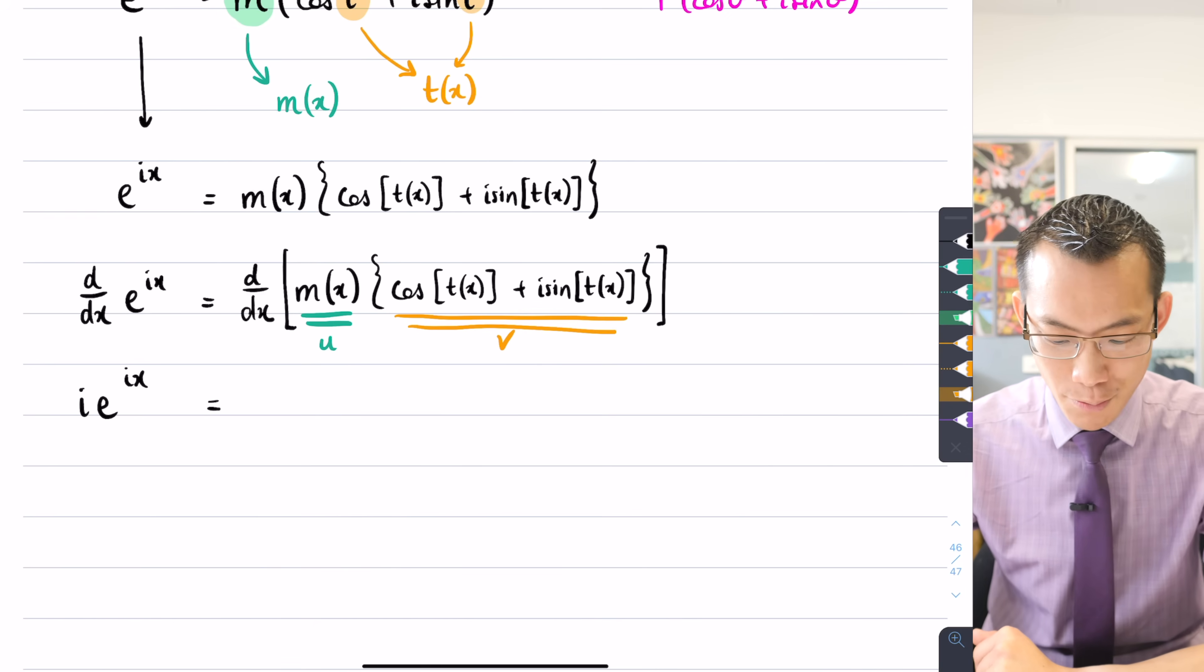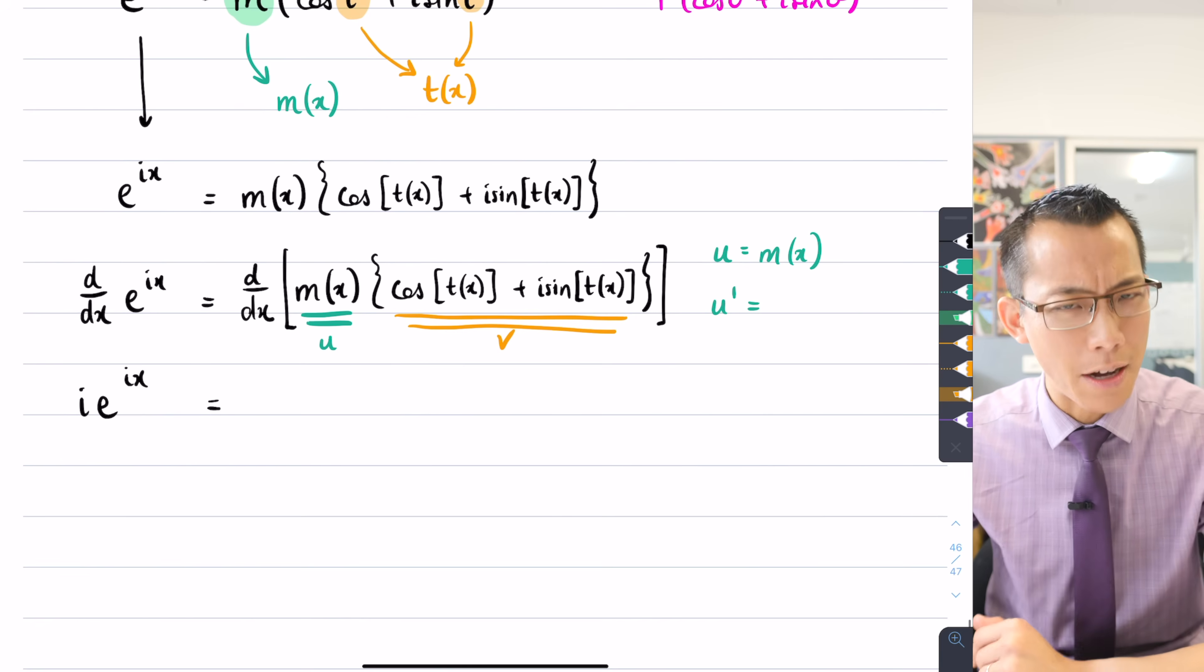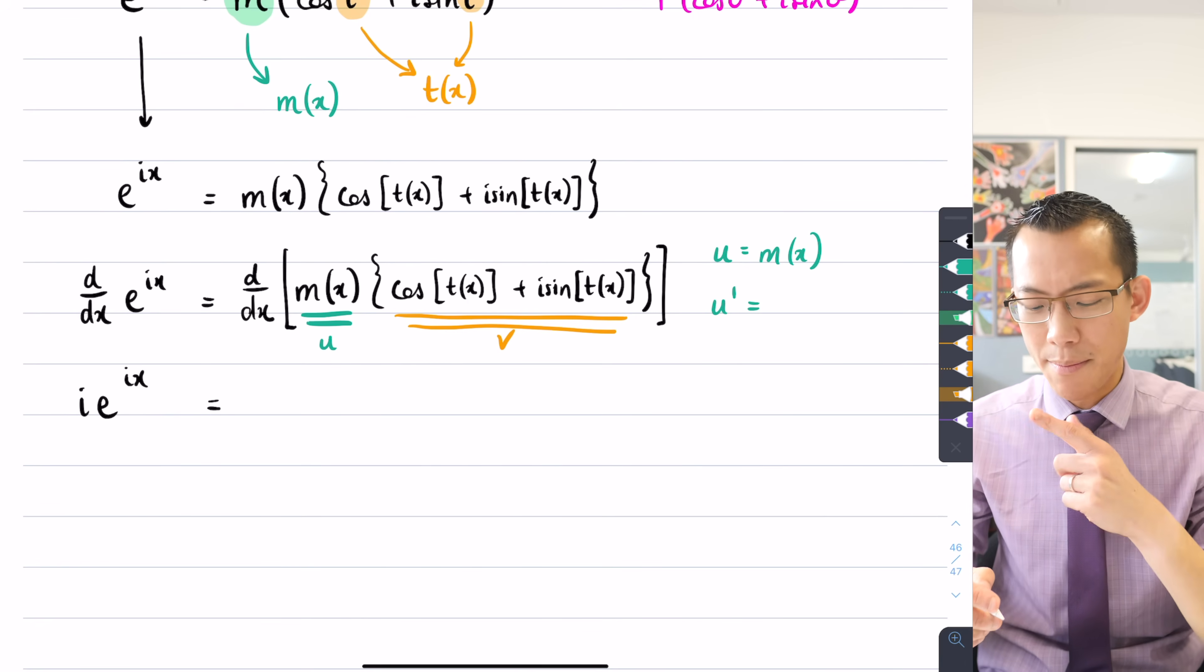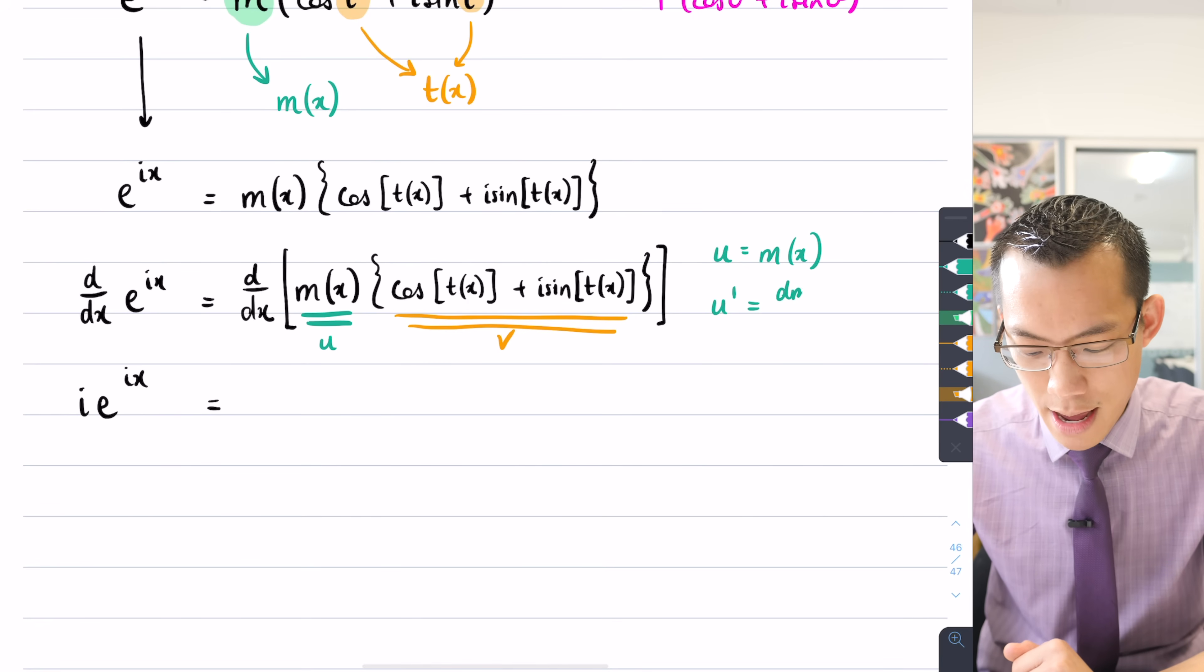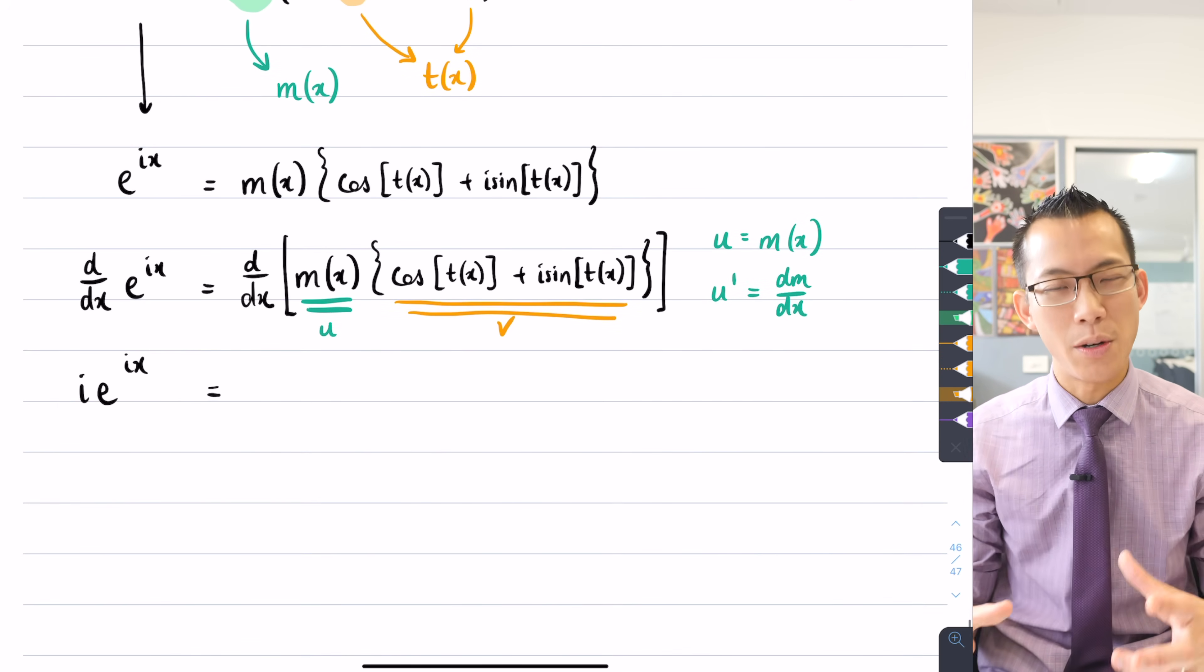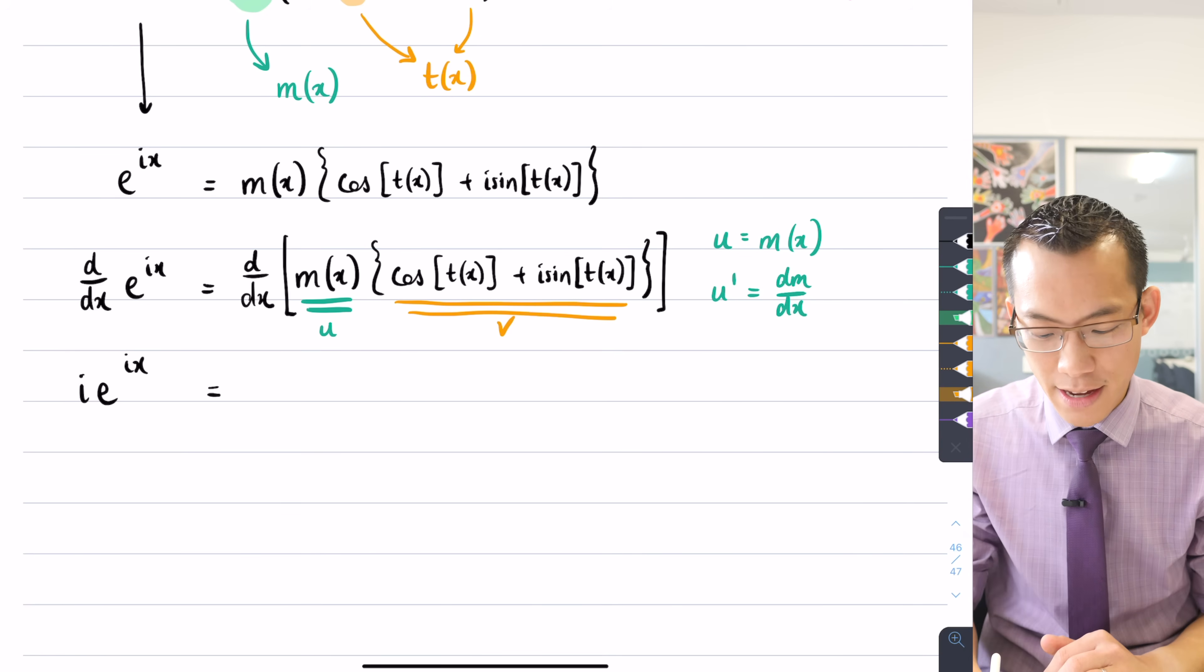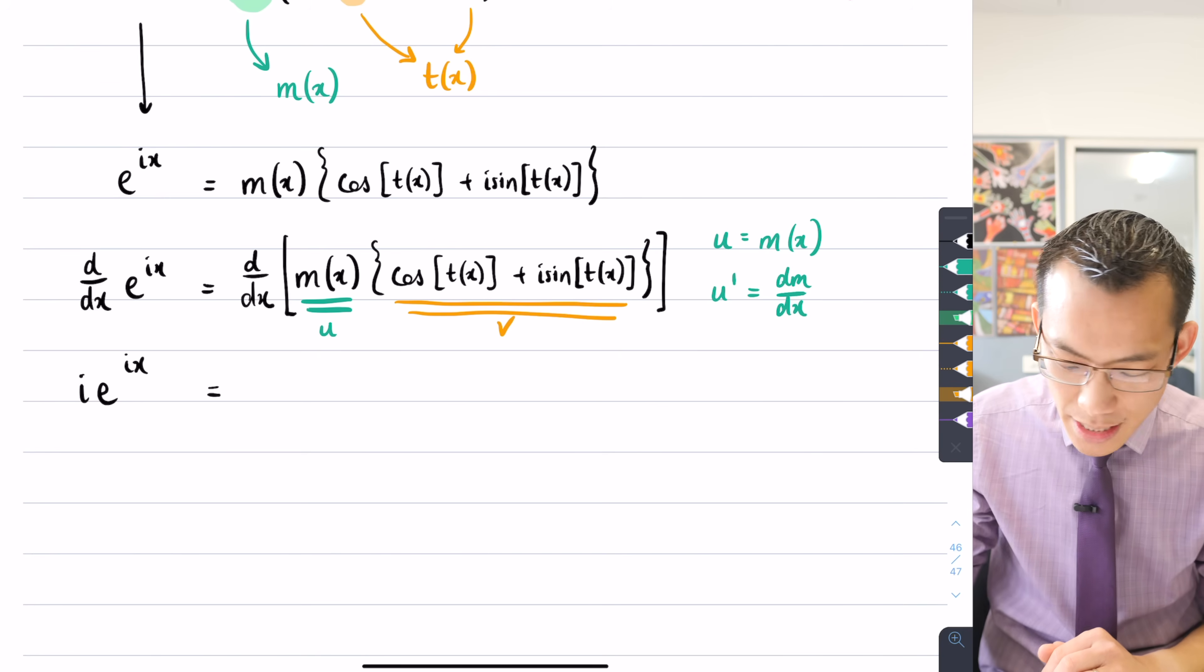So first let's deal with u. So u is just equal to m of x, so therefore u', I would just write that as m. I'm actually going to switch over to the Leibniz notation here, so I'm going to go dm/dx. I try to avoid my dash notation if I can, especially when it's mixing in with other things, because it's so easy to confuse with powers. That is definitely a dash and not a one.